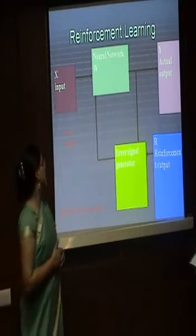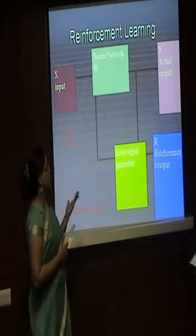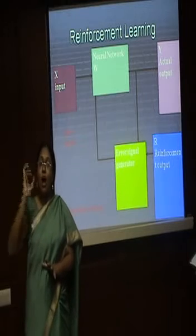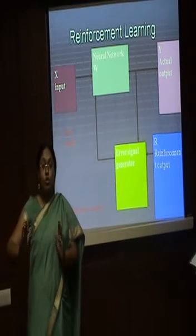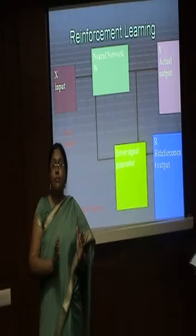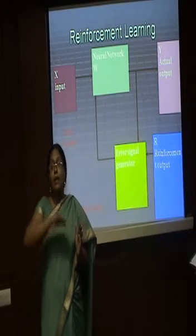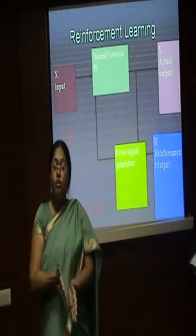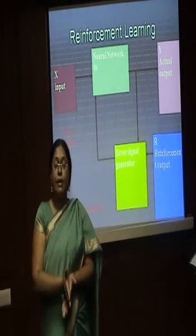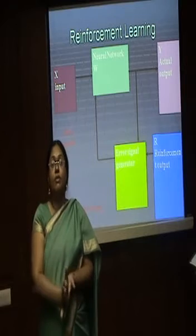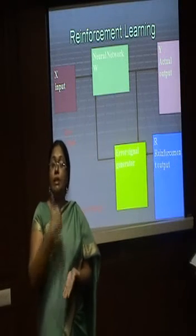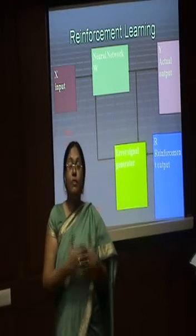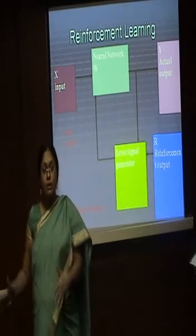Then reinforcement learning: there is a fixed input going to the neural network, which gives an actual output. Reinforcement means I want a specific outcome. If that particular value is not achieved, I give an error signal and take it back to the neural network. The outcome must be only the desired one — reinforcement learning is outcome-based.